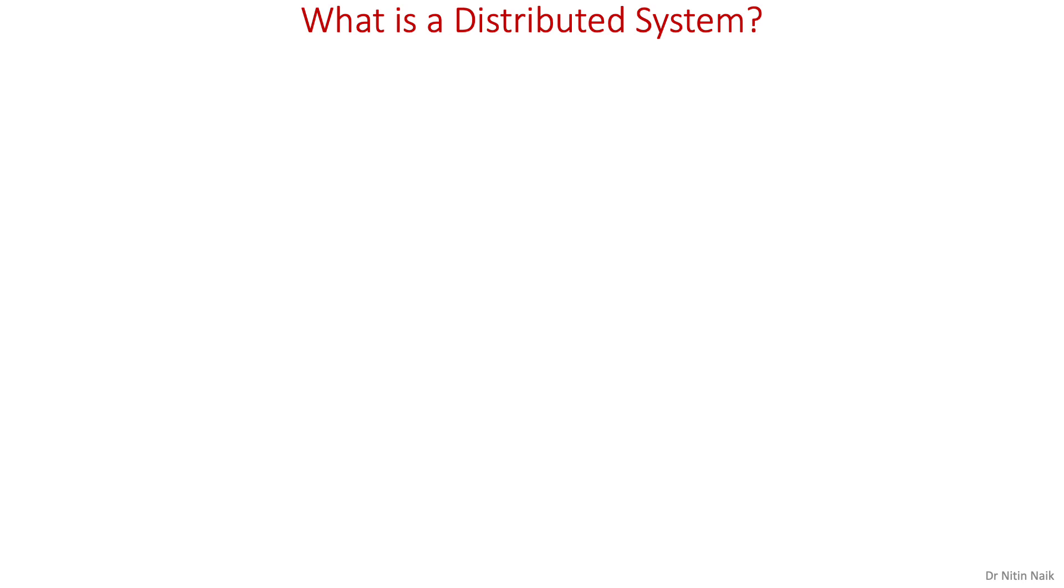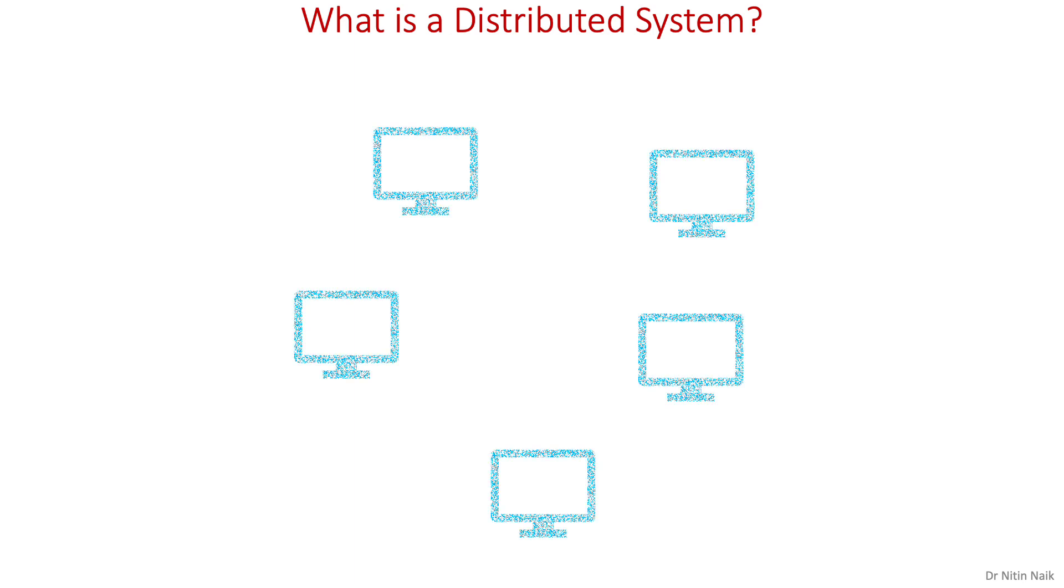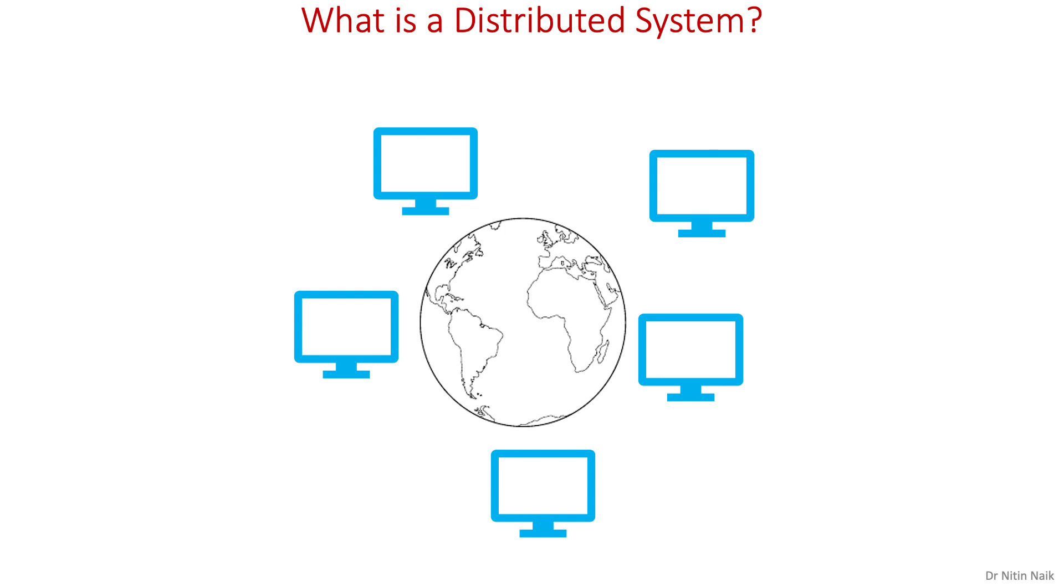What is a distributed system or distributed computing system? The word distributed refers to spreading something or different parts of something over an area. Accordingly, a distributed system refers to a group of autonomous systems spread out across cyberspace.